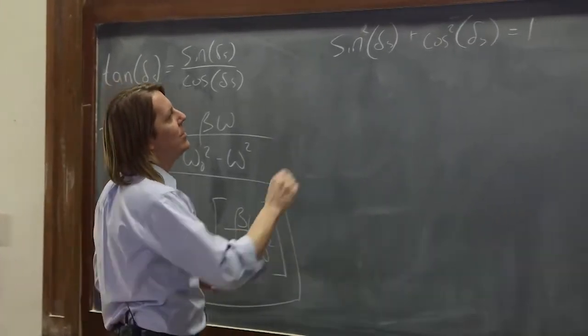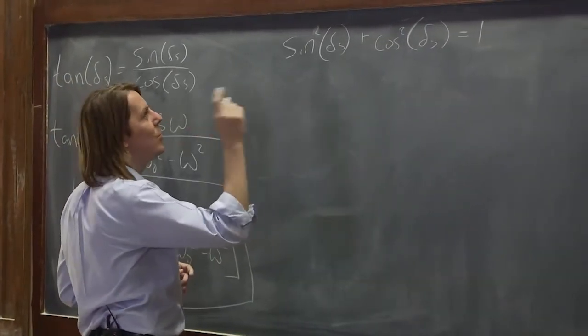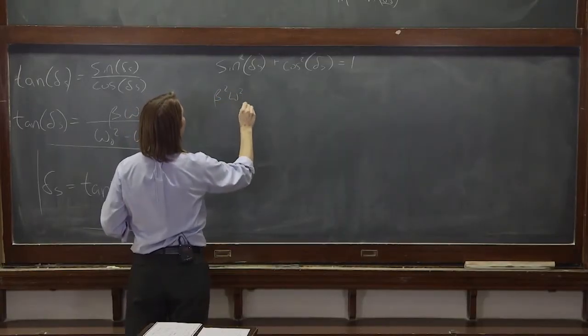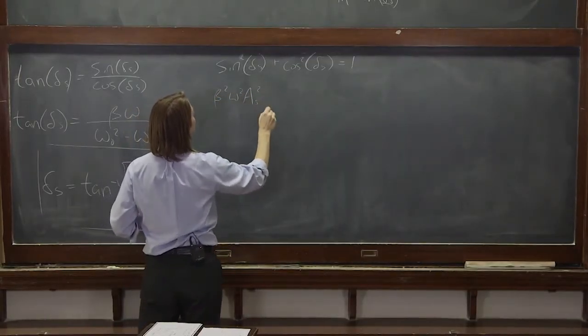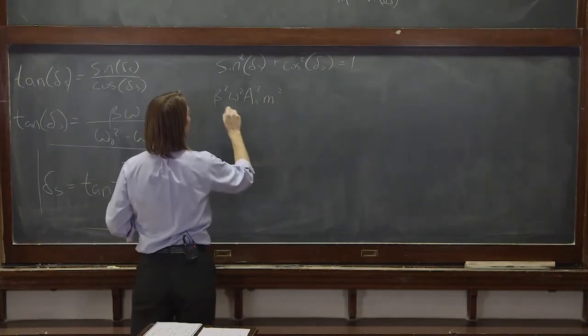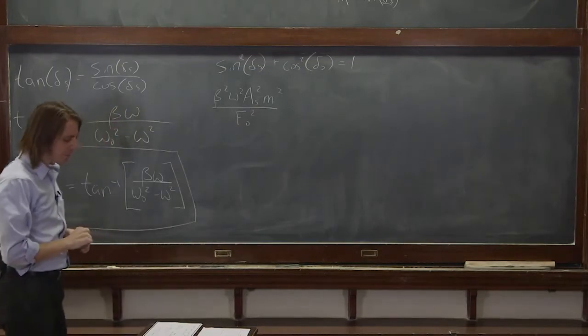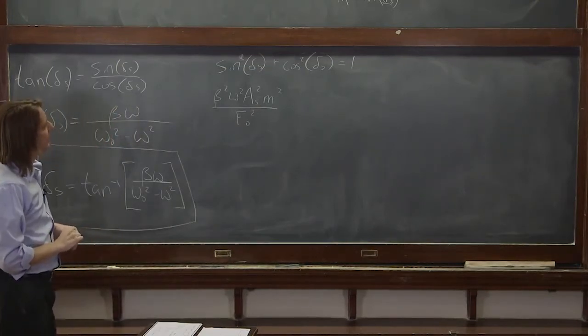So let's see. Sine squared is going to be sine squared. So beta squared, omega squared, As squared, m squared over f naught squared, everything squared. OK. And plus cosine squared.